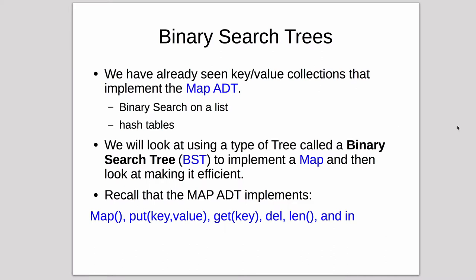Okay, now we're going to look at binary search trees. This is a special type of tree that will implement a key value collection. In the past, in this book, we've looked at key value collections that implement the map ADT. The ones we've seen are binary search on a list and hash tables, which we both use to create a map ADT.